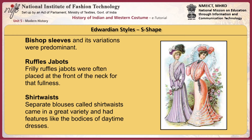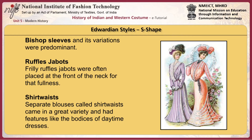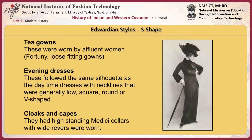The shape of skirts was achieved by goring or paneling. A tailor-made was a woman's suit which was popularly worn. Separate blouses called shirtwaists came in great variety and had features like the bodices of daytime dresses. T-gowns were worn by affluent women, along with Fortuny loose fitting gowns. Evening dresses followed the same silhouette as daytime dresses with necklines that were generally low, square, round, or V-shaped. Cloaks and capes with high standing Medici collars were also worn. Hair was arranged full and loose around the face or pulled into a chignon or bun at the back of the neck.